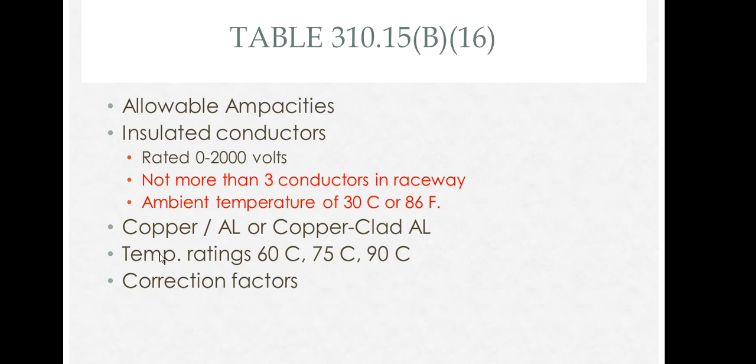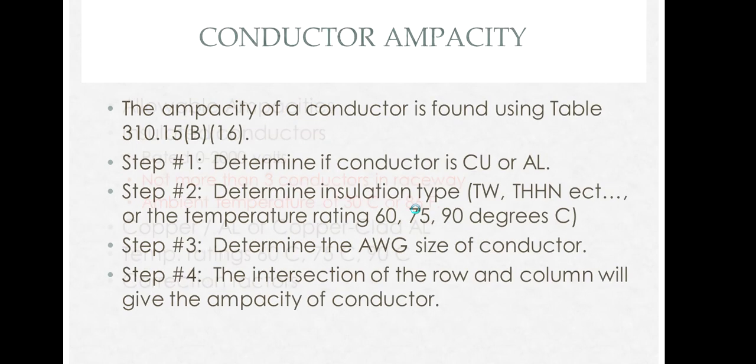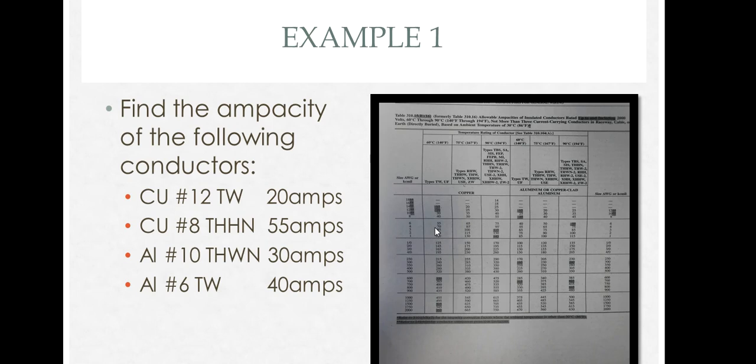This discusses the temperature information about the table. I want to reiterate that there's not more than three current carrying conductors in the raceway, and the temperature was at 86 degrees Fahrenheit. To determine the ampacity, you would take the intersection of the column and the row.